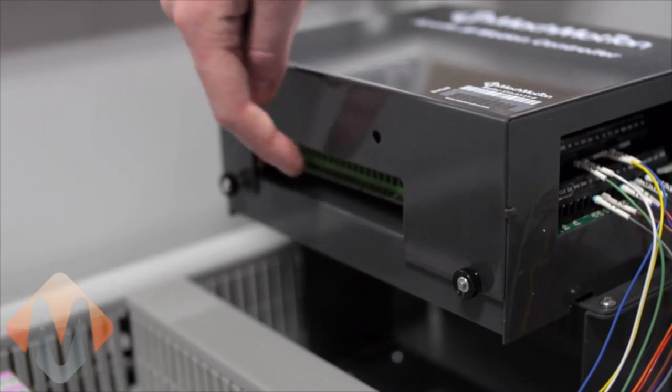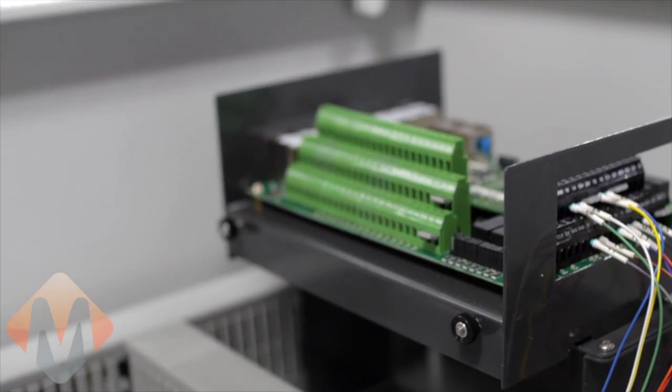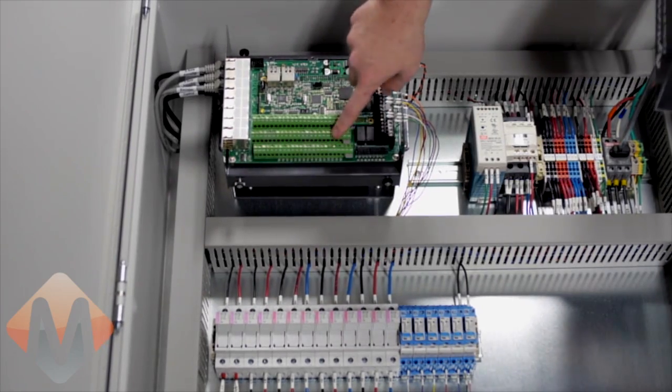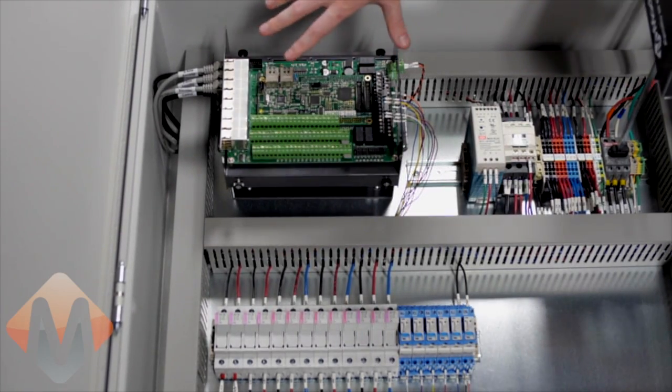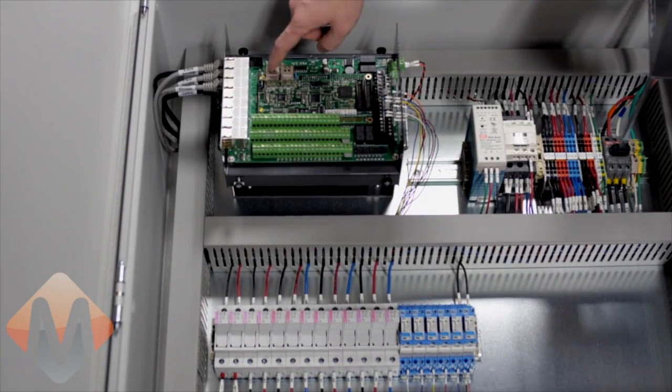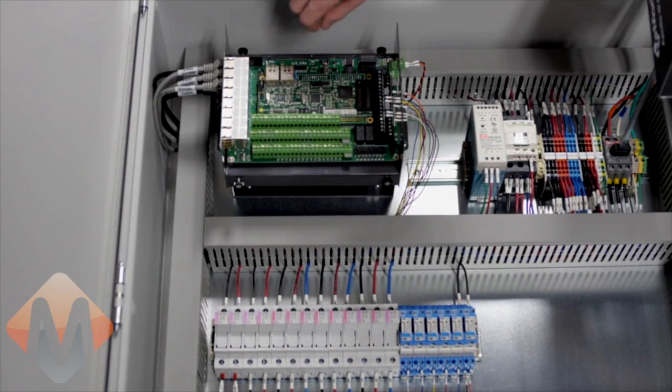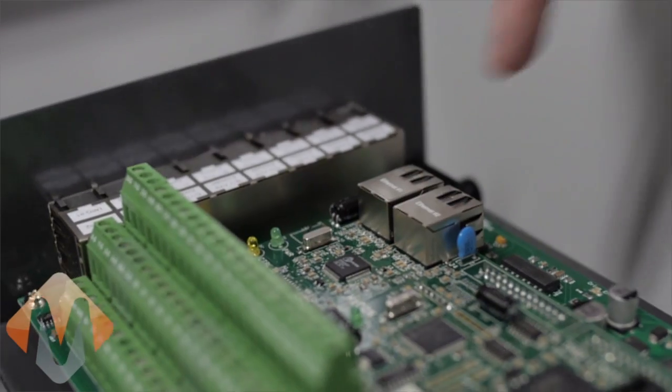The inputs on the Apollo 3 wire into here. You can take the lid off here and you can see these are all the inputs on the system. The Apollo 3 communicates with the control through this ethernet connection. You just connect the ethernet cable from here and run it to the control.